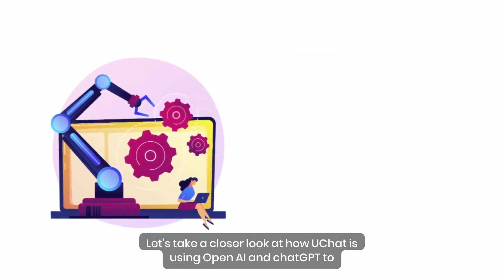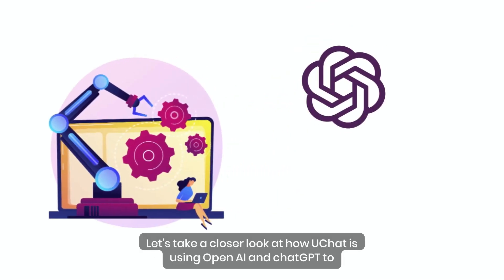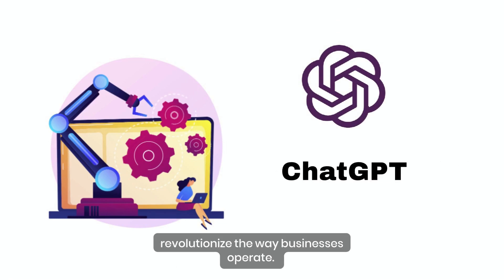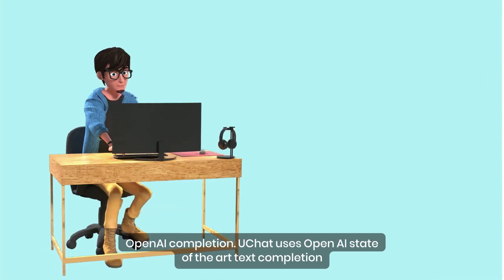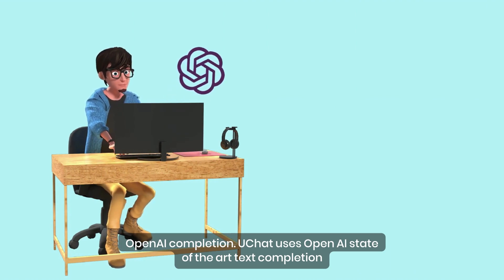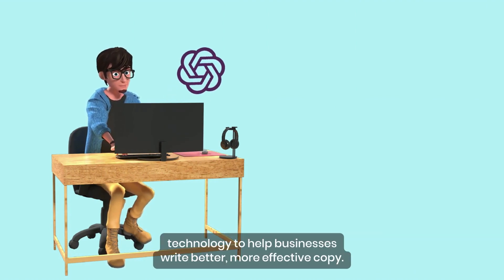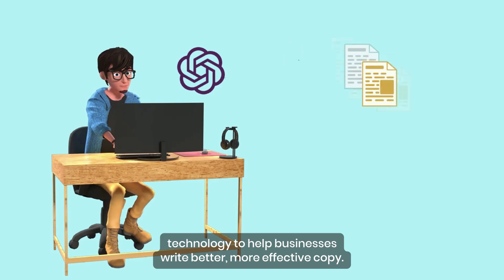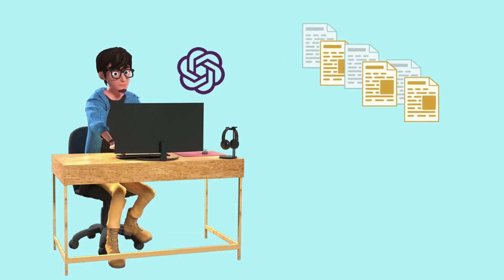Let's take a closer look at how uChat is using OpenAI and ChatGPT to revolutionize the way businesses operate. uChat uses OpenAI's state-of-the-art text completion technology to help businesses write better, more effective copy.